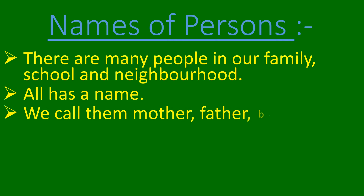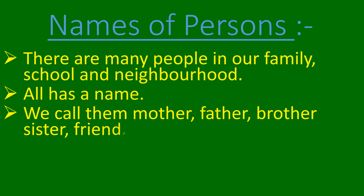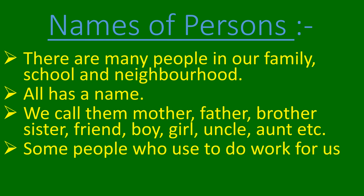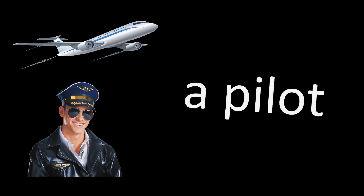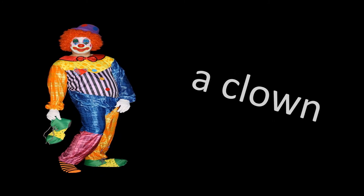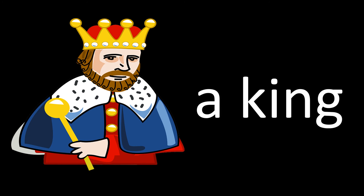We call them mother, father, brother, sister, friend, boy, girl, uncle, aunt, etc. Some people who do work for us are a pilot, a clown, a king, and a carpenter.